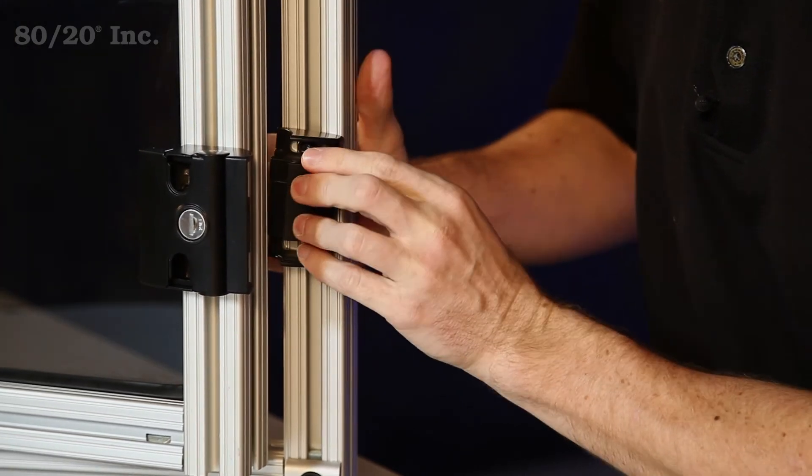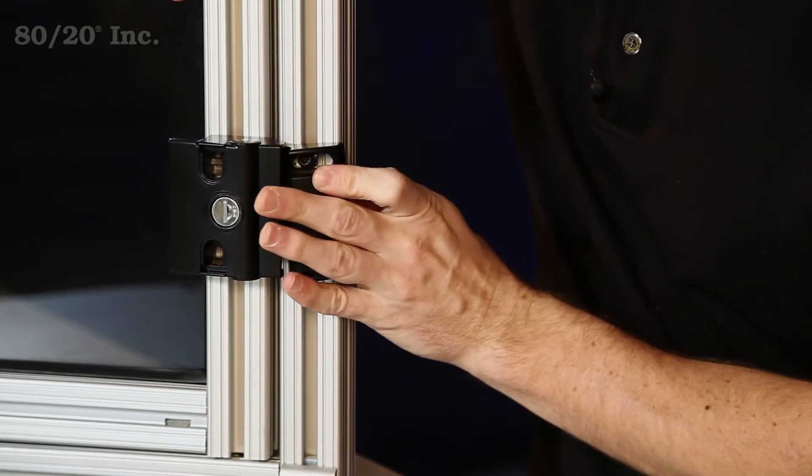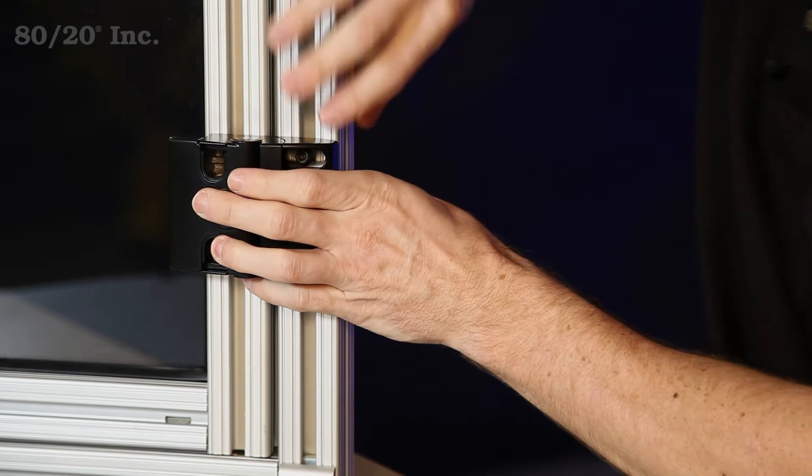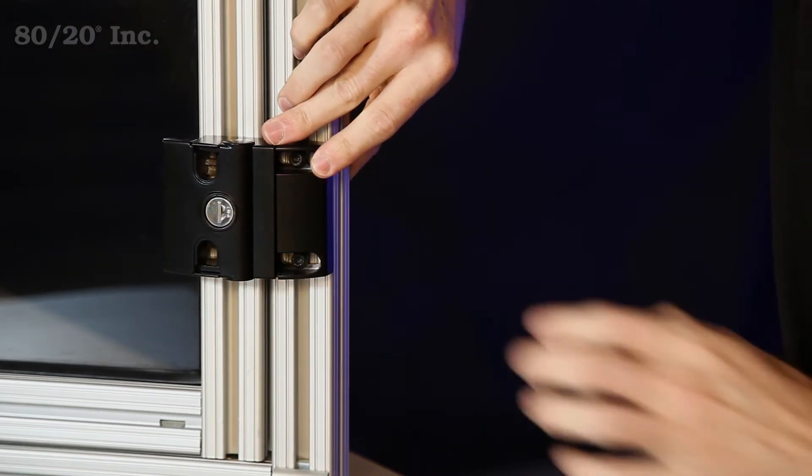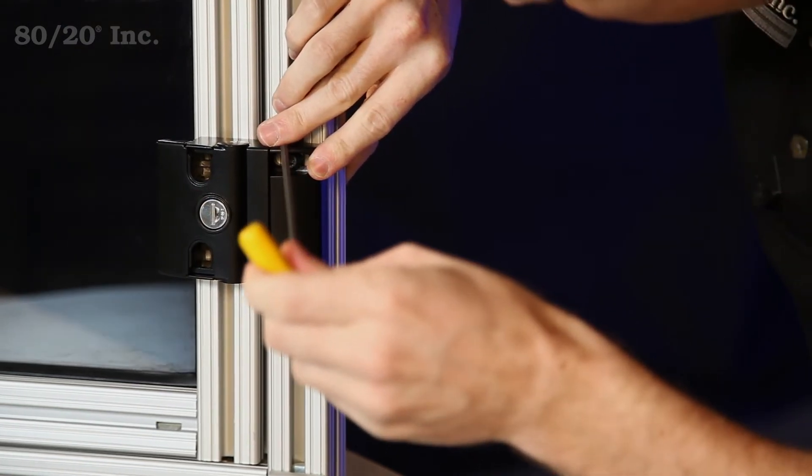Get that in there. We'll line it up with the handle side and snap it all into place. We'll go ahead and hold that into place and grab our wrench and tighten it down.